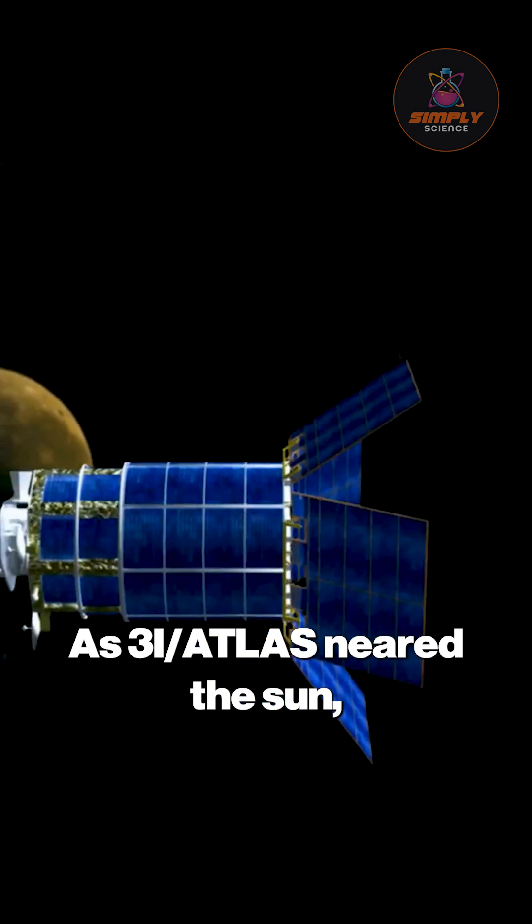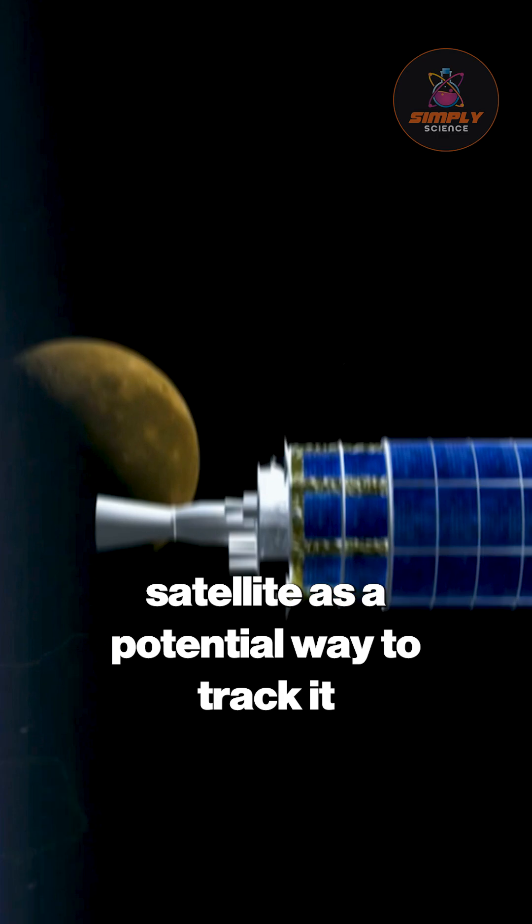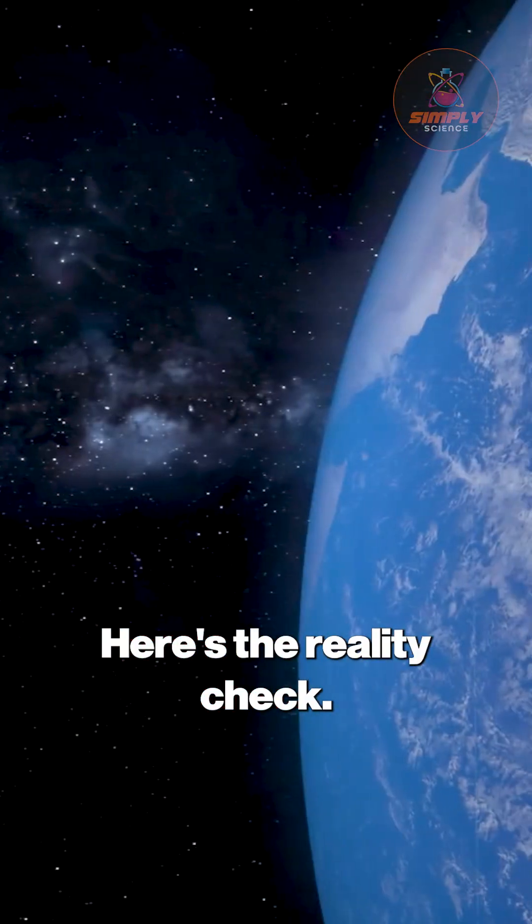As 3i Atlas neared the sun, some pointed to imagery from the GOES-19 satellite as a potential way to track it through the glare. Here's the reality check.